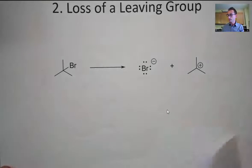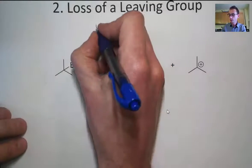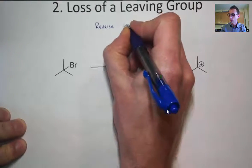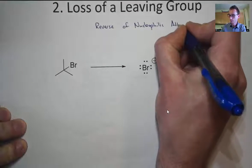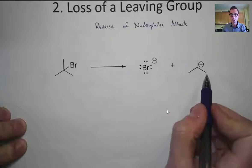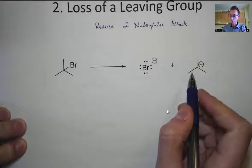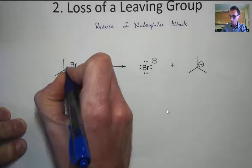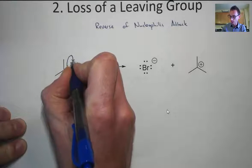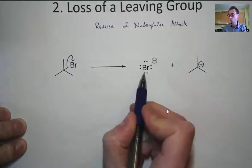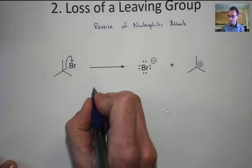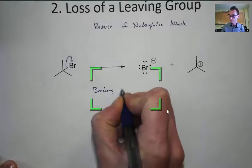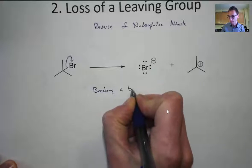The second pattern is just the opposite of a nucleophilic attack — that's loss of a leaving group, which is simply the reverse of a nucleophilic attack. Before, we started with bromide and the carbocation; this time the product is going to be bromide and the carbocation. There's just one arrow where you lose electrons from the bond between carbon and bromine, and the electrons go to the bromine, forming a bromine with a negative charge and a carbon with a positive charge. This process breaks a bond, as opposed to forming one.